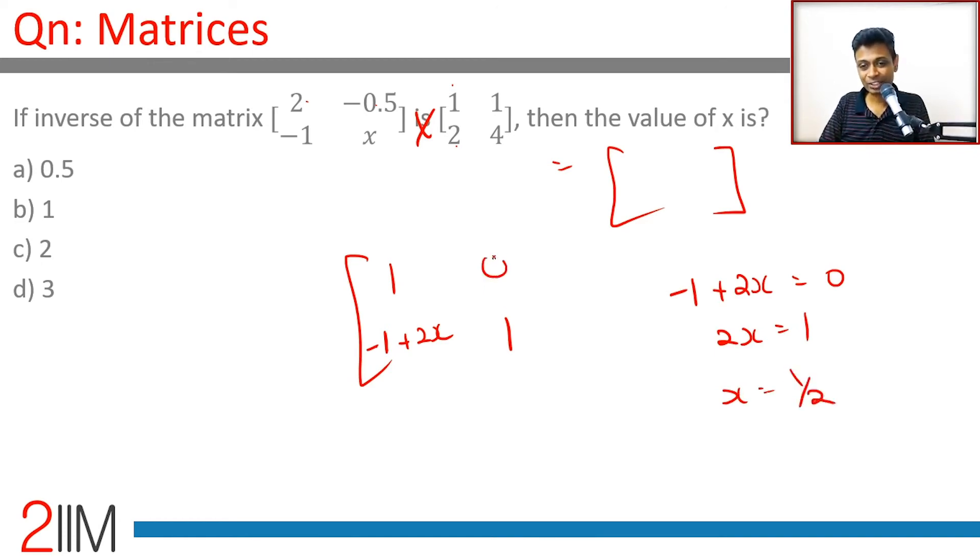Automatically this should also turn out to be 0, this should turn out to be 1. We just need one value then you're through, otherwise the question will not be consistent. If x were half, it should be 0.5. Let's multiply these two to get the identity matrix and then you're done.